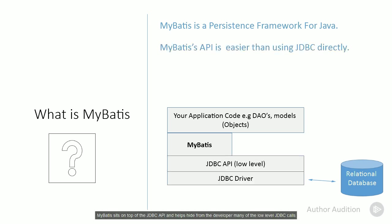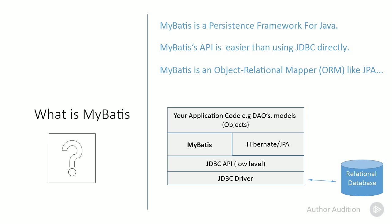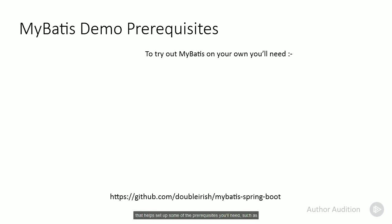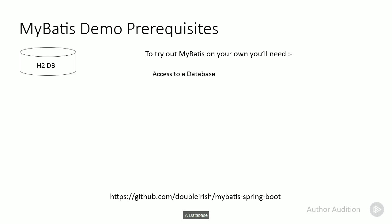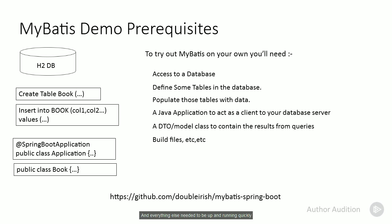MyBatis sits on top of the JDBC API and helps hide from the developer many of the low-level JDBC calls. MyBatis is similar to Hibernate/JPA in that they both help simplify the interaction with a database. It's different from JPA in that it uses a SQL-centric approach, which we'll see later. I've created a sample project on GitHub that helps set up some of the prerequisites you'll need, such as a database. We use an H2-based in-memory embedded database for easier setup. It comes with some tables defined, data pre-populated, and everything else needed to be up and running quickly.